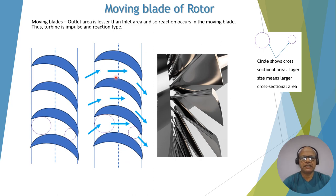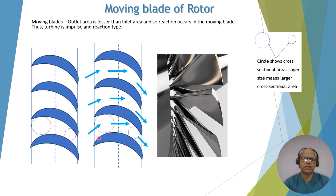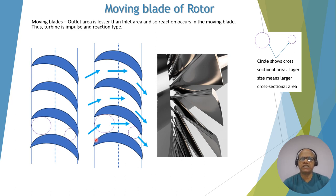You can see the moving blade of impulse and reaction turbine. Since it is a reaction blade, if you look at the profile, there is a larger circle and a smaller circle. The larger shows the larger cross-section area and the smaller shows the smaller cross-section area. So the outlet cross-section area of the moving blade is smaller than the inlet. Because of this, the relative velocity at outlet is greater than at inlet, and there is a drop of pressure when steam is flowing in the moving blade. This is what is called the reaction.